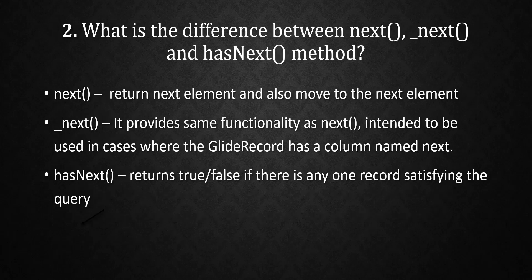Now moving to the second question: what is the difference between the next() method, the _next() method, and the hasNext() method? The next() method is generally used with a GlideRecord — gr.next() — and it returns the next element and also moves the cursor to the next element.